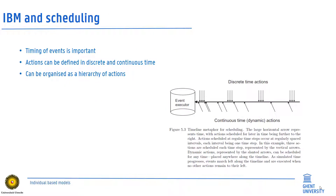When individual-based models model daily life, it is important to think about the timing of events. Actions can be defined in discrete time — for instance as sequences of events at specific ages — or in continuous time where actions can take place any time based on some probabilistic function. Events can be organized as a hierarchy of actions, conditional on each other. For instance, death may occur only after birth, or certain movement steps can only be made when individuals have decided to leave a place or recognize certain features of the environment.